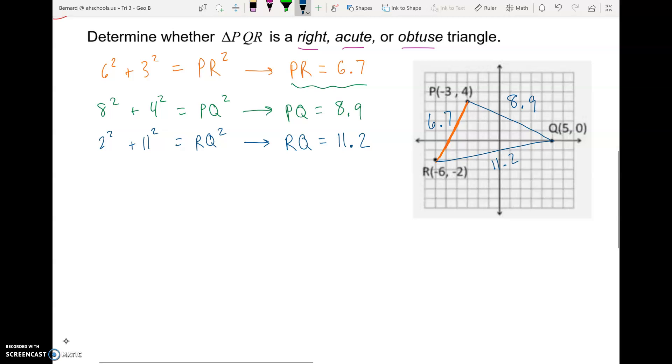Now we want to decide if it is right, acute, or obtuse. So we need to pick the biggest one. We'll call that C. That's 11.2. So we'll square that by itself. And then we'll square the other two and add them together. So 6.7 squared plus 8.9 squared. And let's see what we get when we do all this. 11.2, if we don't round it before we square it, is going to come up to 125. And then same deal with 6.7 and 8.9. Try not to round them. If we square both of those numbers, we actually get 125 as well. 125 is equal to 125. So when they are equal, we have a right triangle.